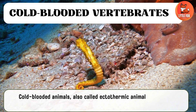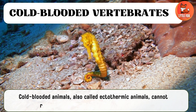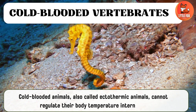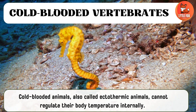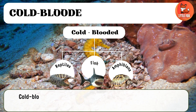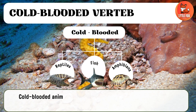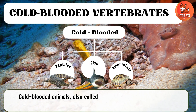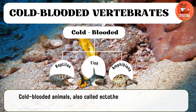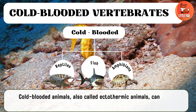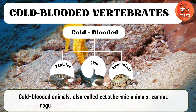Cold-blooded animals, also called ectothermic animals, cannot regulate their body temperature internally. Instead, their body temperature changes with the environment.